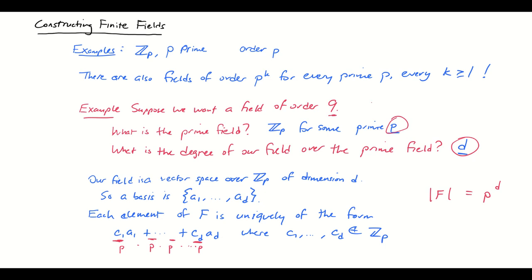So if I want my field to have order 9, then I need p to the d to equal 9, which means I need p to equal 3 and d to equal 2. So I need to construct an extension field over Z mod 3 that has degree 2. How am I going to do that?